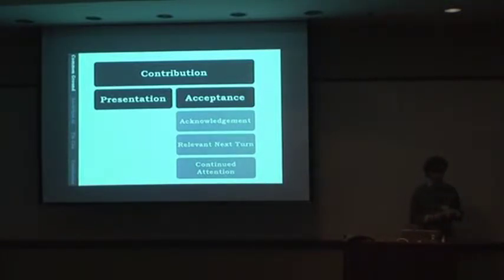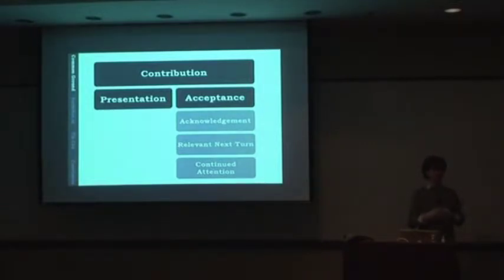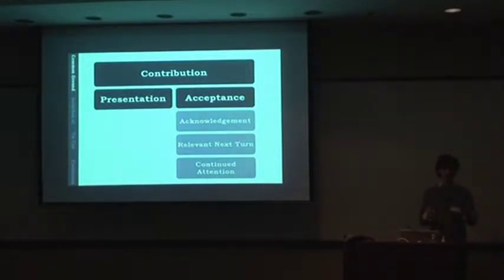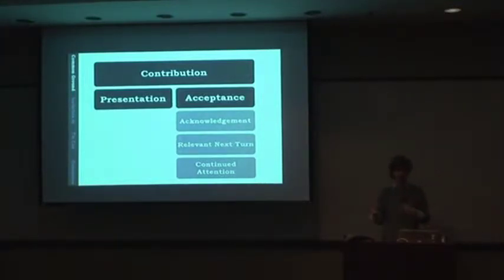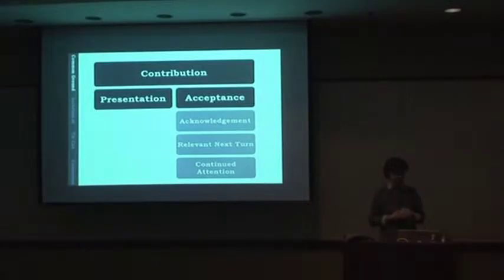The next one is a relevant next turn: if I say I'm going to lunch and you say something that shows you understood—like asking who are you going with?—you've acknowledged my statement and asked a reasonable question in response. Without doing an explicit acknowledgement pair, you've just behaved like you understood it. You can have some disconnects, which just end up in more presentation-accept pairs. So relevant next turns are just: I say something, you say something reasonable in response, and we've got our present-accept pair.